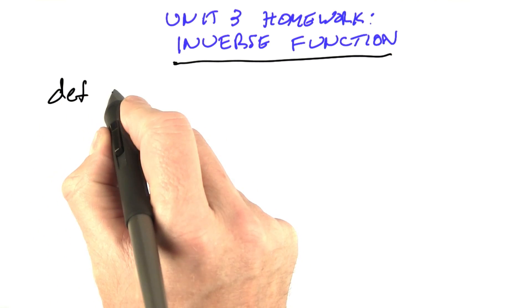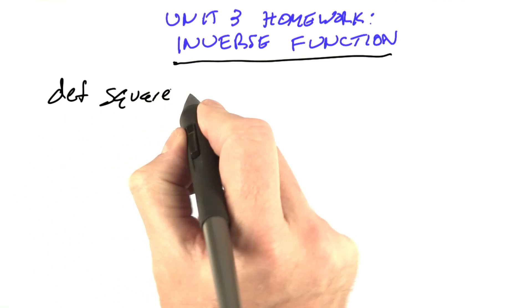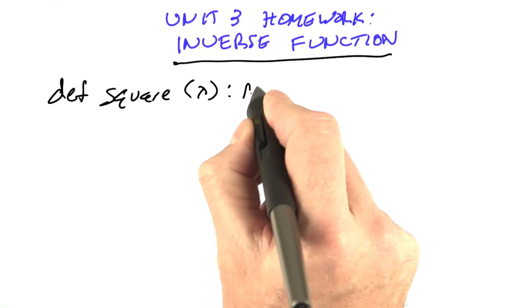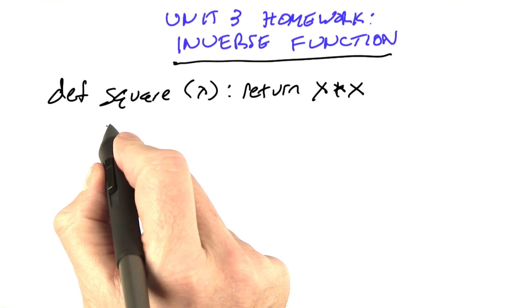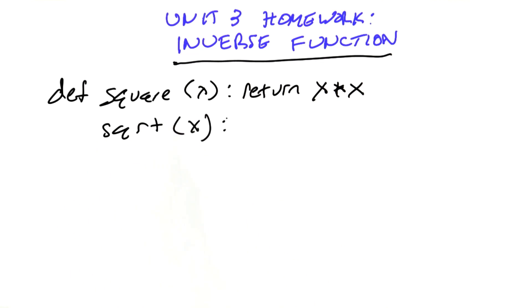The square function for squaring numbers is easy, right? To square x, we just return x times x. But if we wanted to define the square root function, well, that's a lot harder.